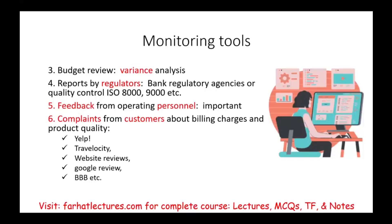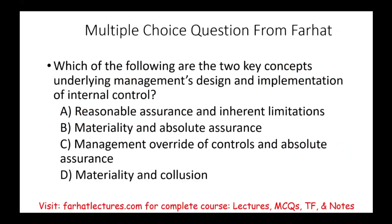Let's look at a multiple choice question from Farhat Lectures dealing with internal control overall. Which of the following are the two key concepts underlying management's design and implementation of internal control? Starting with option D: materiality and collusion. They do want to avoid collusion, but materiality — meaning something we can ignore because it's not large enough — cannot be applied when it comes to control. We do cost-benefit analysis, but that is different from materiality. So D is not the answer.